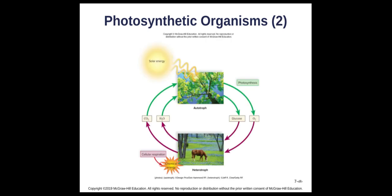Here is the overview: solar energy shines on plants, photosynthesis produces oxygen and glucose. Oxygen and glucose are taken up by heterotrophs, which do cellular respiration, releasing water and carbon dioxide that goes back to plants. That cellular respiration gives heterotrophs ATP — chemical energy for their cells to do work.